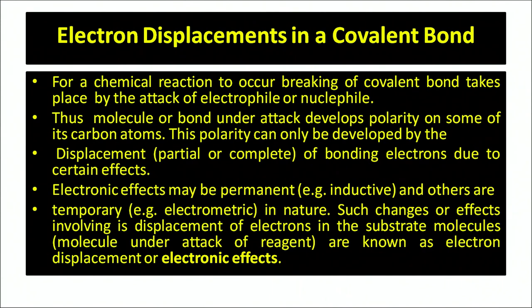Electron displacement in covalent bond: for a chemical reaction to occur, breaking of a covalent bond takes place by the attack of an electrophile or nucleophile. Thus, the molecule or bond develops a polarity on some of the carbon atoms. This polarity can be developed by the displacement of bonding electrons due to certain effects. Electronic effects may be permanent like the inductive effect, or temporary like the electromeric effect. Such changes involving displacement of electrons in the substrate molecule under the attack of a reagent are known as electron displacement or electronic effects.